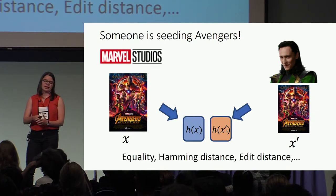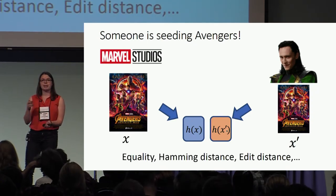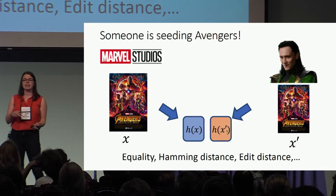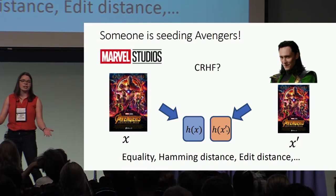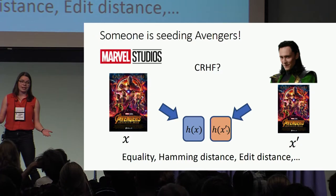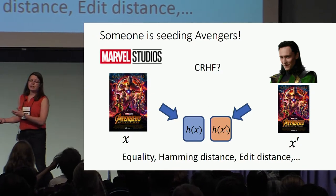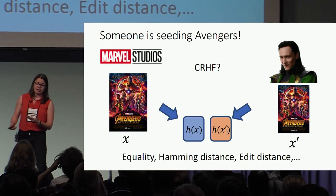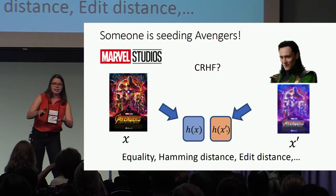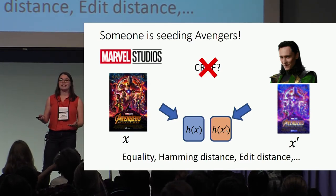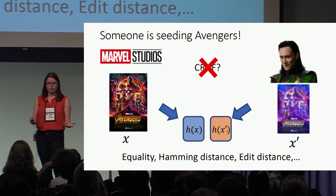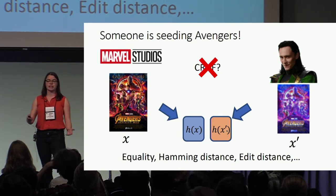They might want to test equality, or test Hamming distance or edit distance. Their first thought might be: why not just use a collision-resistant hash function? Well, Loki's very clever, so he's just going to slightly alter a couple of bits in the movie. It'll still play fine, but it will render this test unusable and this hash function unusable.